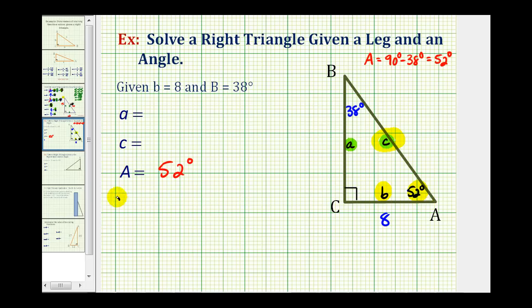So our equation will be the cosine of 52 degrees must equal the ratio of the adjacent side to the hypotenuse, or eight over C.